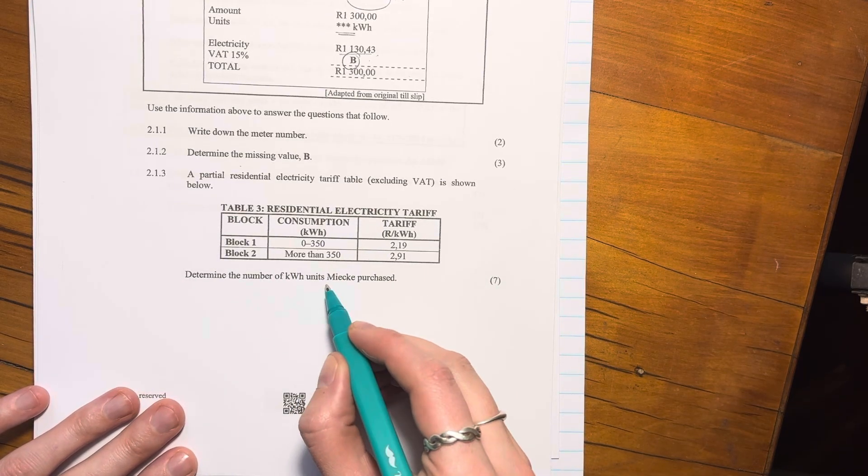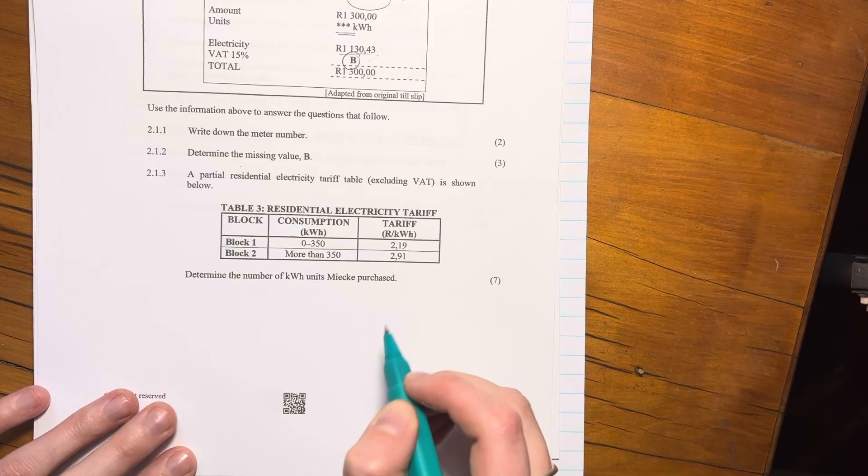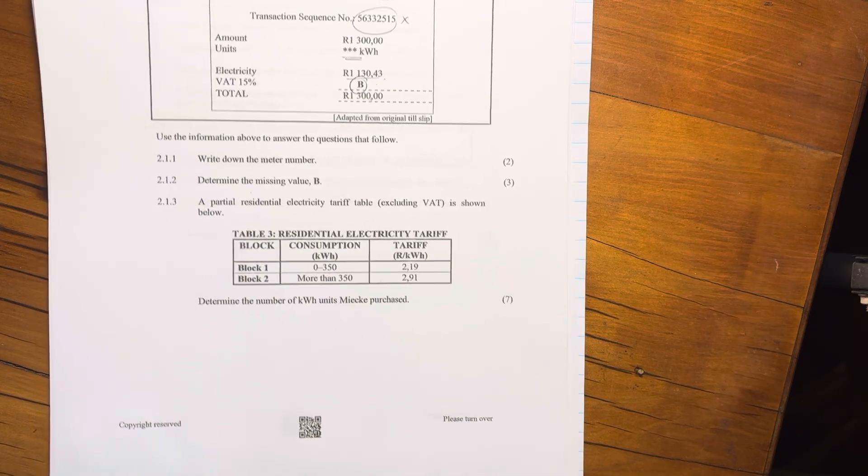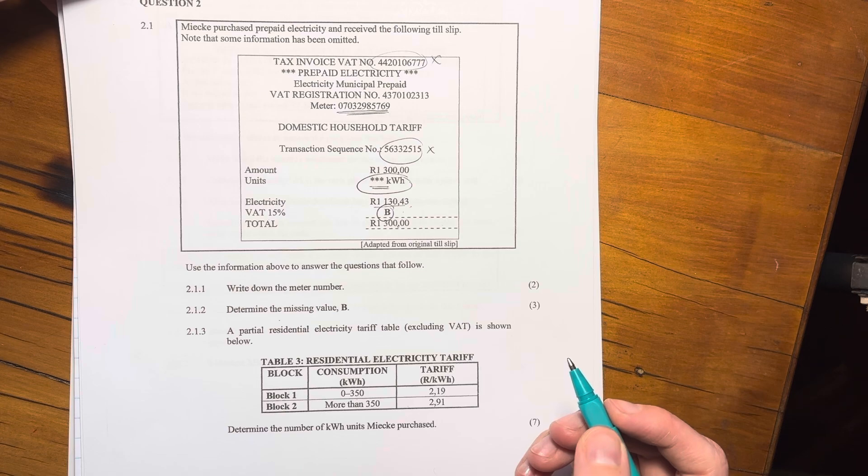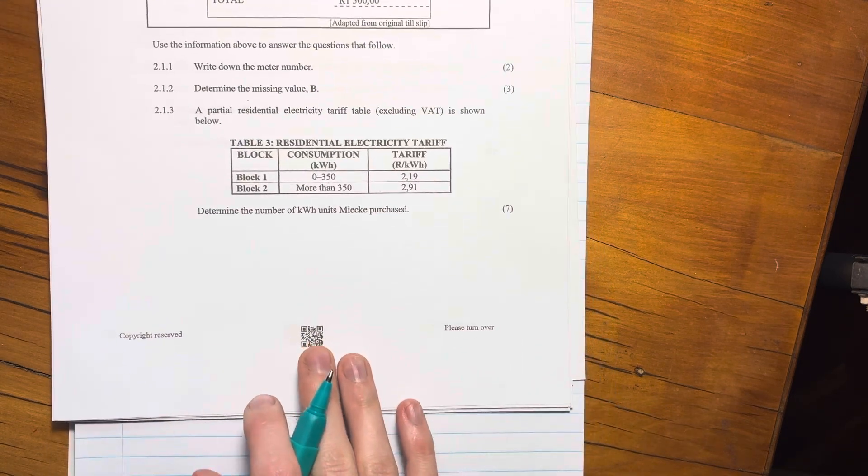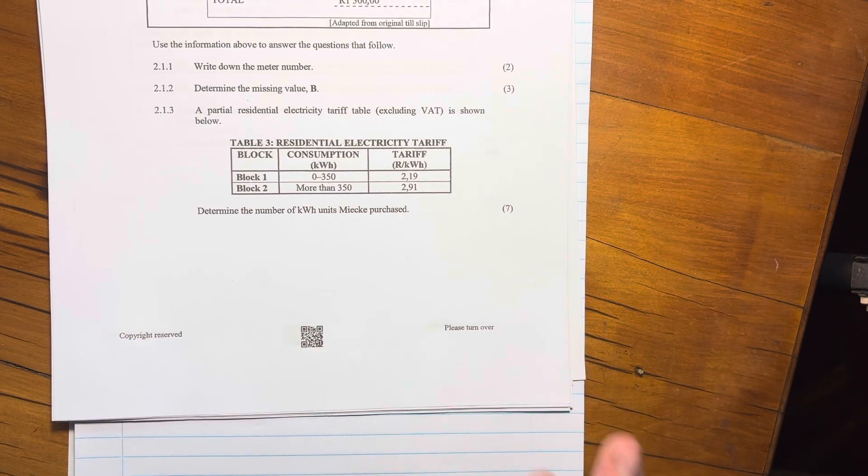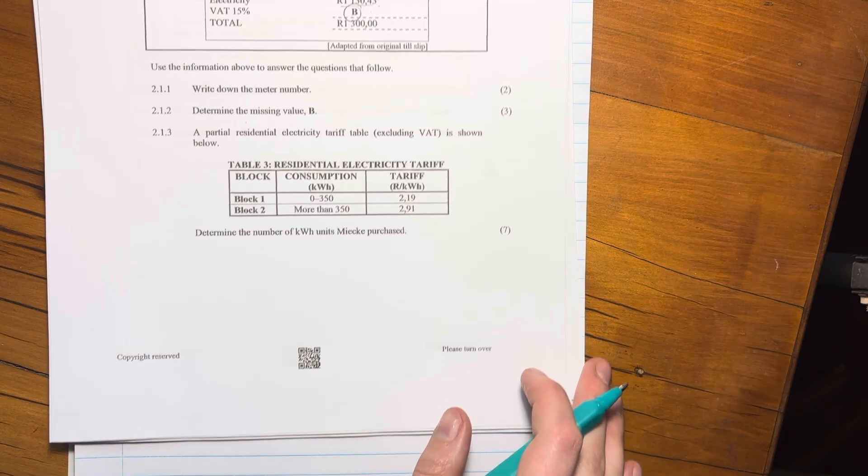Determine the number of kilowatt units Mike purchased. Okay. So basically, it's asking us, what is this unknown value here? Now, the best thing to do to start this, and our students often, they look at these questions and they're like, I don't know what to do. The best thing to do is to say, well, what is the amount?